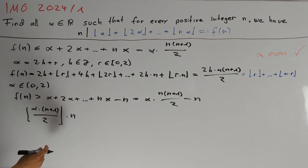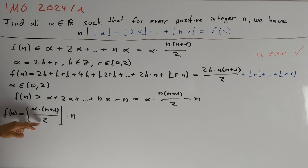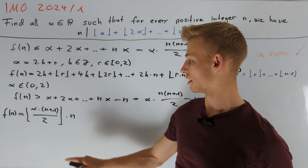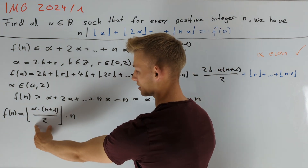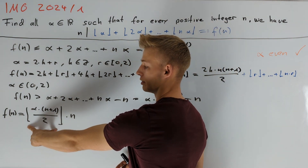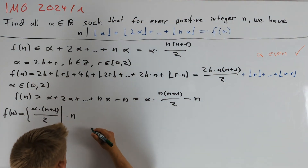Since f of n is divisible by n, we know f must equal this value. We are dealing with alpha in the open interval (0, 2), so alpha divided by 2 is less than 1. This implies that if n increases by 1, the term inside the floor brackets increases by less than 1. Therefore we expect that at some point, when n increases by 1, this term will not jump over the next integer, and therefore this floor value stays the same.